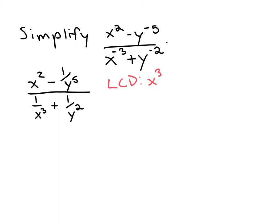Now we also need a power of y. The least common denominator is the least common multiple of those denominators, so we should include the higher exponent. Therefore, our LCD is x cubed y to the fifth.